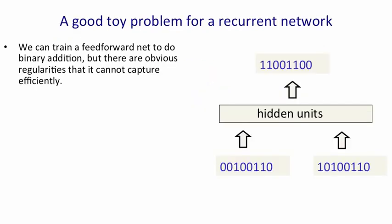So consider the problem of adding up two binary numbers. We could train a feedforward neural network to do that. And the diagram on the right shows a network that gets some inputs and produces some outputs.